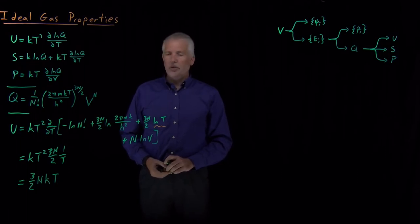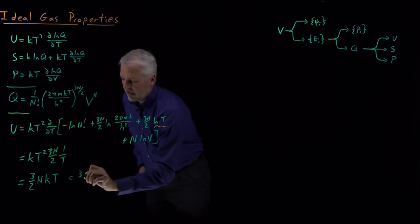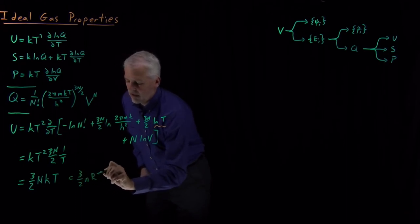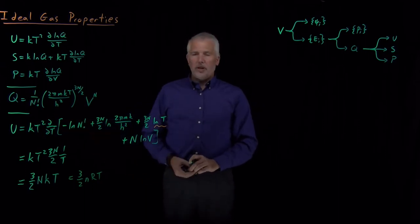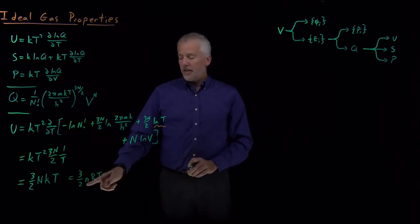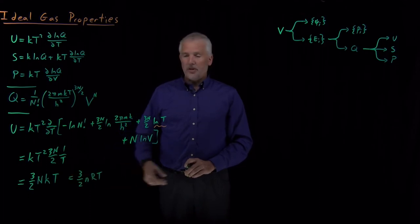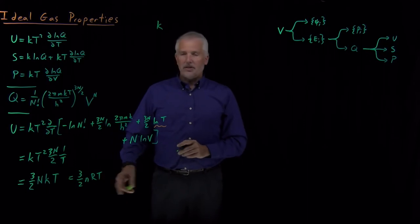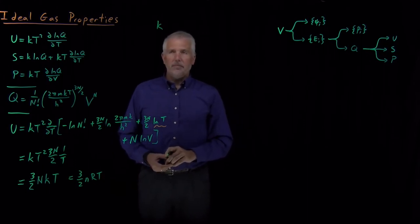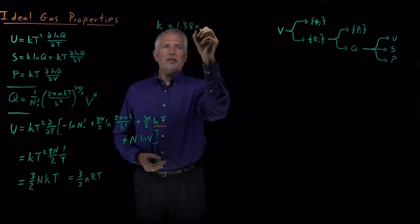That may sound a little bit familiar. In fact, you likely are aware of the equation, similar sounding equation, internal energy of a monatomic ideal gas is 3 halves n r t, where in this case r is the gas constant and n is the number of moles of the gas. And in fact, these two equations are exactly the same thing because Boltzmann's constant k and the gas constant r are also the same thing.